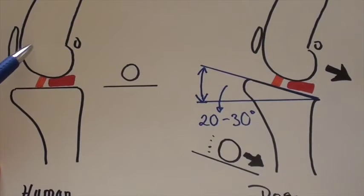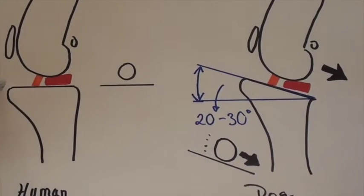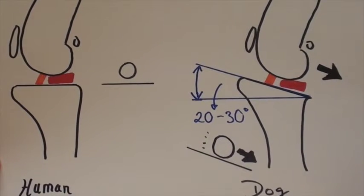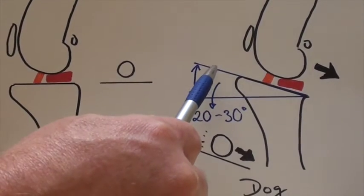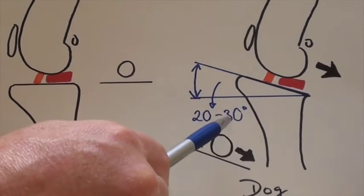The big difference, however, is in the human knee, the femur rests on a flat tibial plateau. In contrast, with the dog knee, there is a slope to this bone of 20 to 30 degrees.